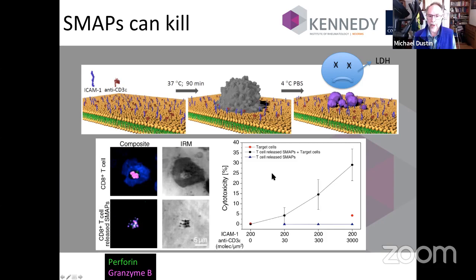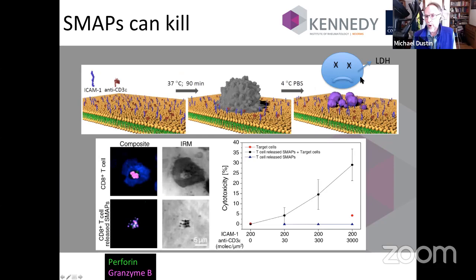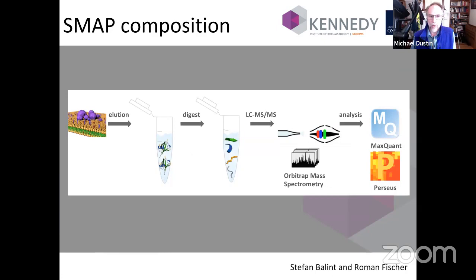The result shows that with increasing concentrations of anti-CD3, SMAPs become increasingly cytotoxic. The arming of particles seems related to the strength of the activation trigger — not just any trigger to release them. Controls confirm there's no spontaneous LDH release from SMAPs themselves. So SMAPs can kill autonomously without the cytotoxic T cell. Importantly, no peptide pulsing was used, so there's no implication of T cell receptor in this killing, which matters for the final picture of these particles.